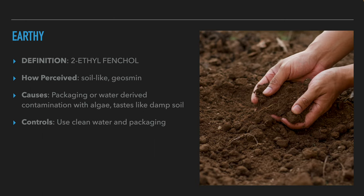The next off flavor that can appear in beer is earthy flavor. This flavor and aroma are perceived as soil or algae. This flavor comes from water that is contaminated with algae. It has a flavor of wet soil and river algae. To avoid this off flavor, the brewer should use clean water.